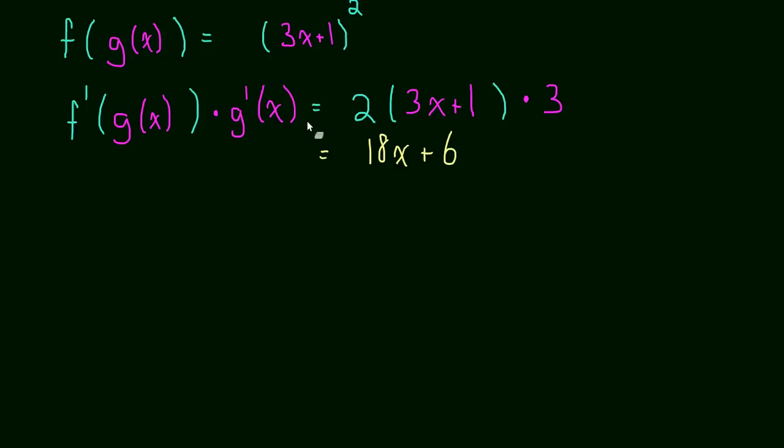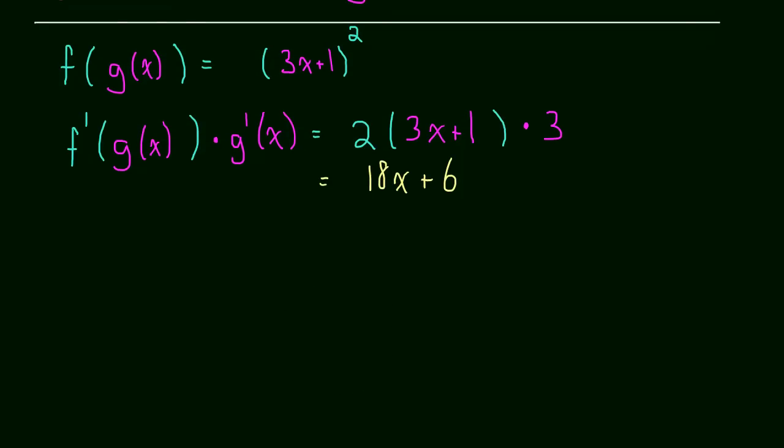What if we had a function that looked something a little bit more complicated? What if we had a function that looked maybe like this? h of x is equal to 3x plus 1 to the hundredth power. Well, now we have a problem. Because the way we would have solved this before when we were doing the previous h of x example, we actually did the multiplication. We did 3x plus 1 times 3x plus 1. But now we're going to have to do that a hundred times in a row. And that is going to be a very tedious task.